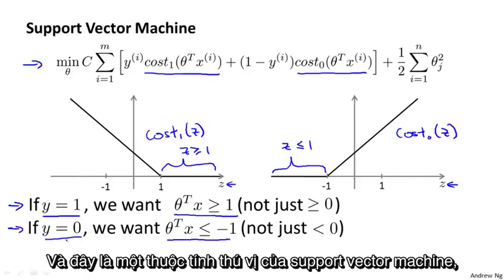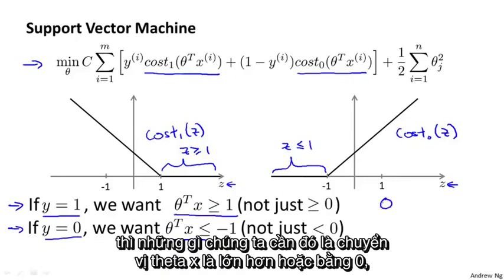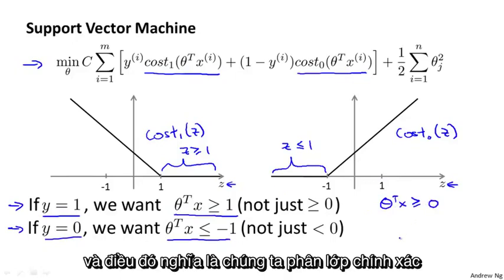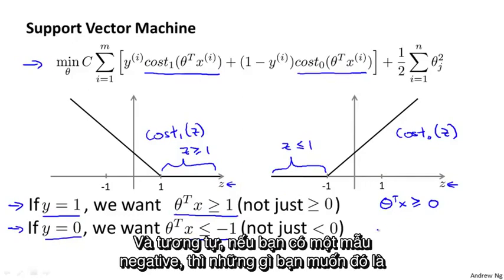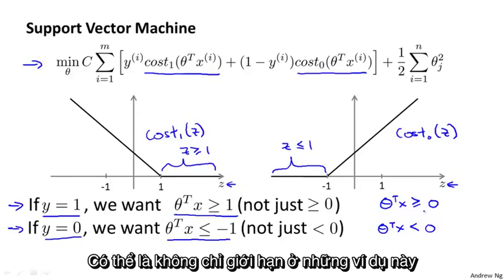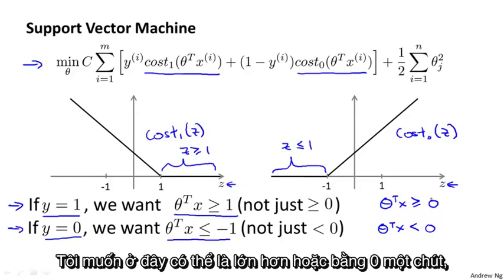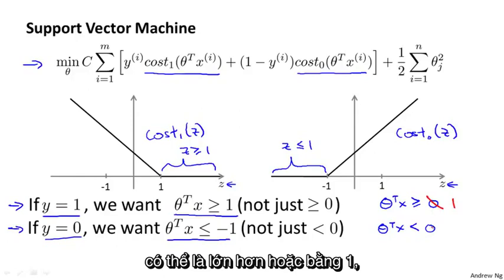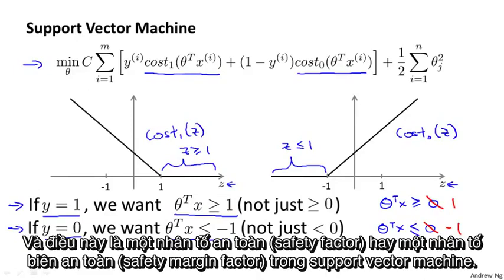This is an interesting property of the support vector machine. If you have a positive example where y equals one, then all we really need is that θᵀx is greater than zero to classify correctly. But the support vector machine wants a bit more than that — it doesn't just want to barely get the example right. It wants θᵀx to be quite a lot bigger than zero, say greater than or equal to one, and for negative examples less than or equal to minus one. This builds in an extra safety margin factor into the support vector machine.